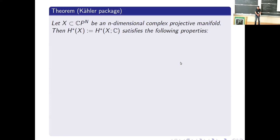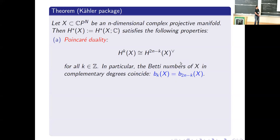Let me start with the Kähler package — we saw this already in the previous talk in the algebraic setting, so let me quickly overview the geometry behind it. I will focus on complex projective manifolds for now and work with cohomology with complex coefficients. As classically known, this satisfies Poincaré duality, so cohomologies in complementary degrees are dual to each other, and in particular Betti numbers in complementary degrees are equal.